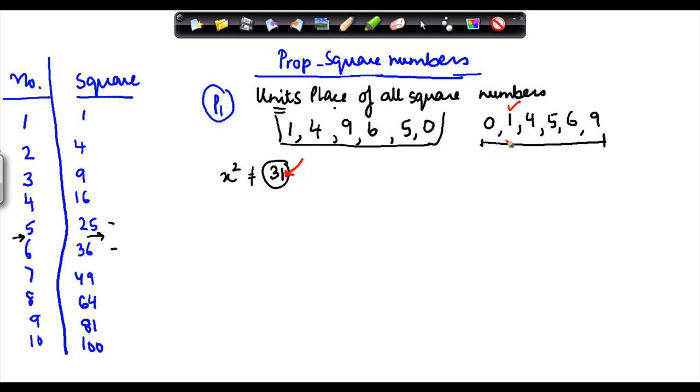So the mere fact that a number has the following number at units place does not mean that it is a square number. But if a number has other numbers which is 2 here, 3 here, then between here you get 7 you get 8 again here. So if a number has 2, 3, 7 or 8 in units place then it is definitely not a square number.